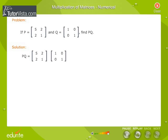Here, in this example, matrix P is of the order 2 by 2 and matrix Q is of the order 2 by 2. So they can be multiplied since the number of columns in matrix P is equal to the number of rows in matrix Q, that is 2. Therefore, the order of matrix PQ will be 2 by 2.